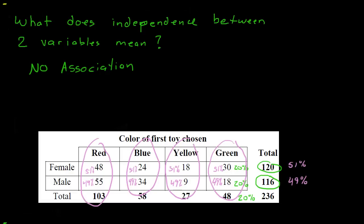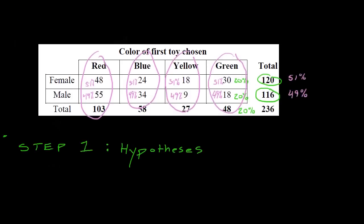This is just a sample, so don't ever expect the data to match up perfectly. The point of this test is to ask: is our data close enough that there is no association, or is one or more of the categories so far off that there really is an association between color and gender? That's what the chi-squared test will tell us.